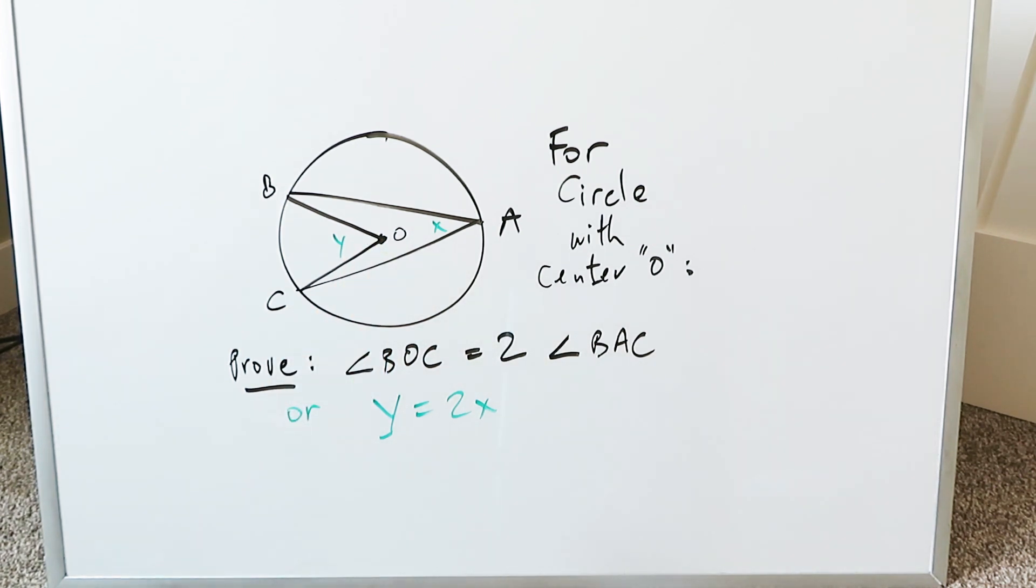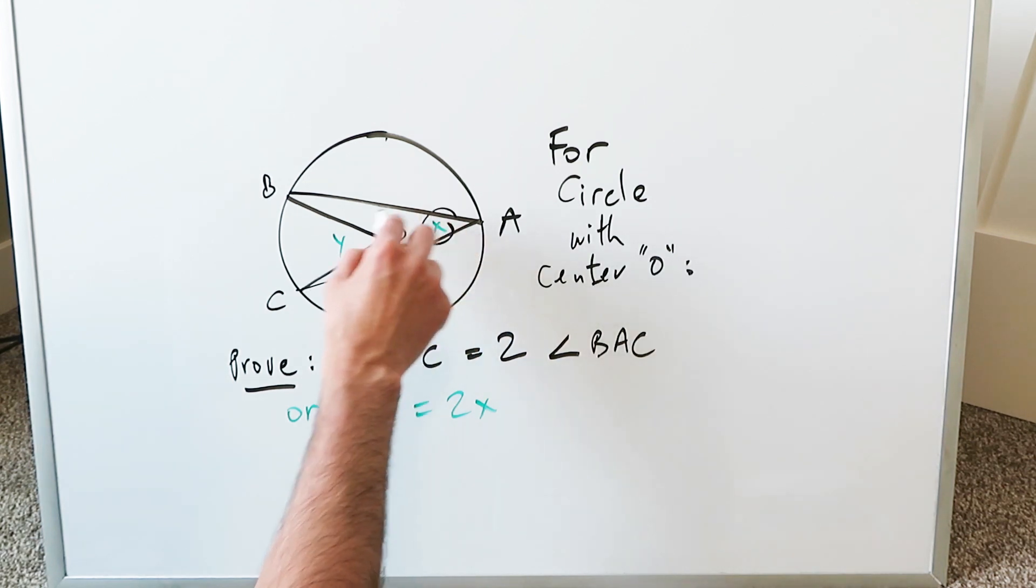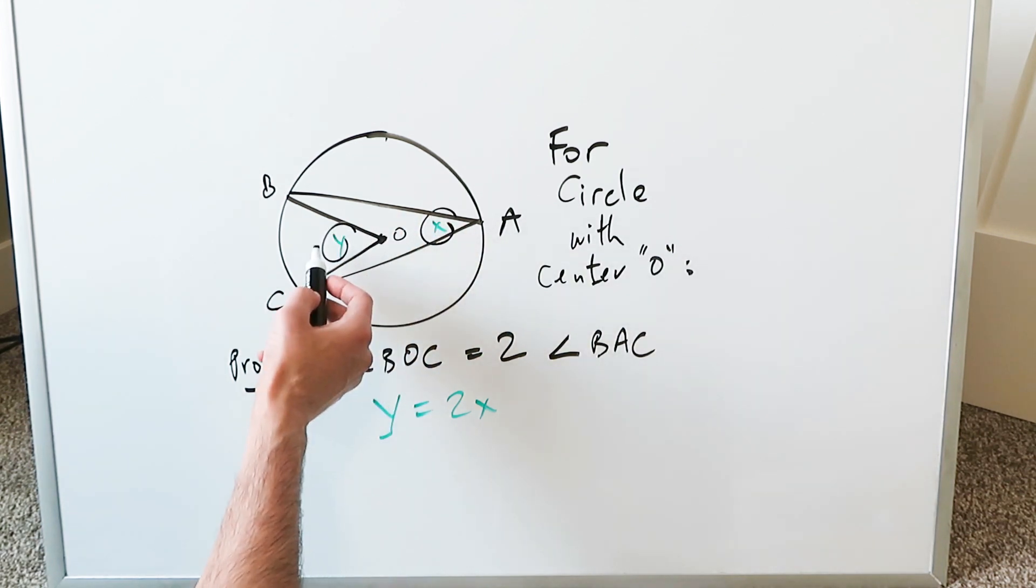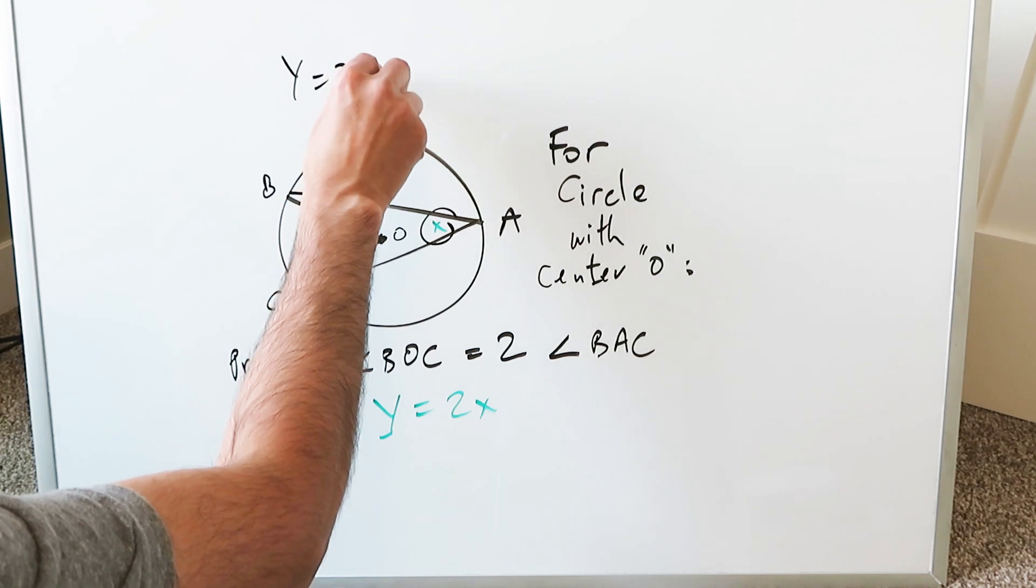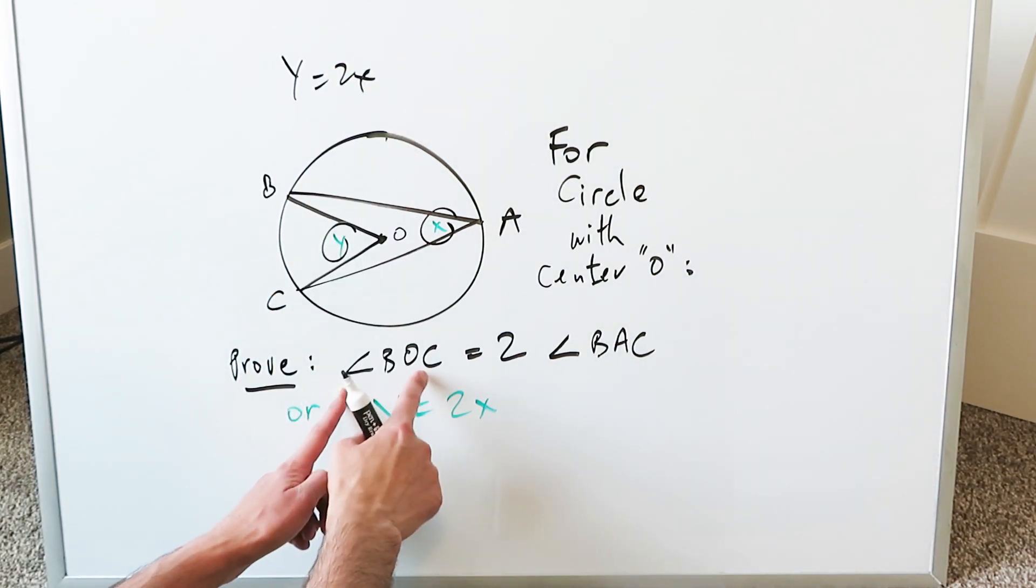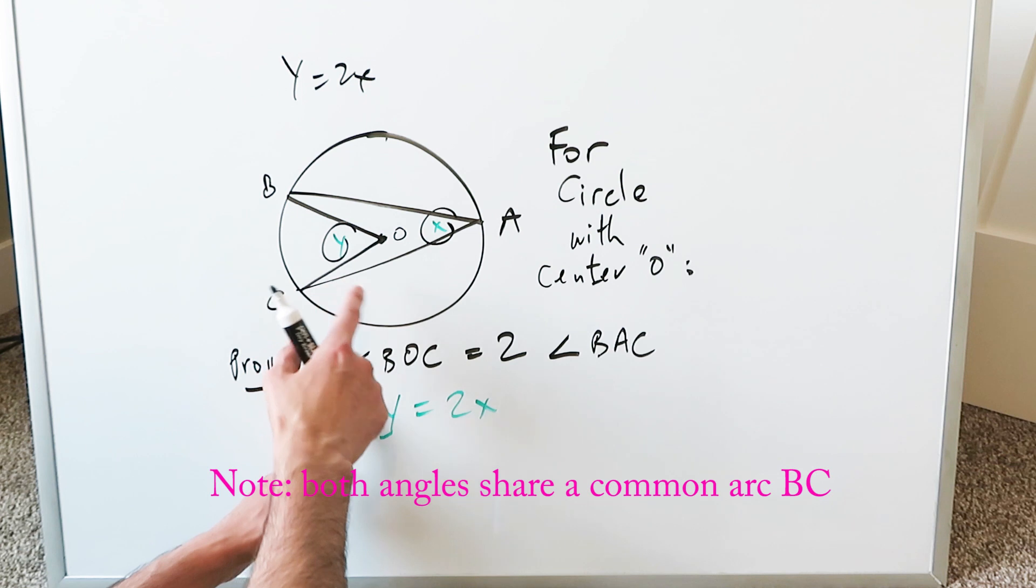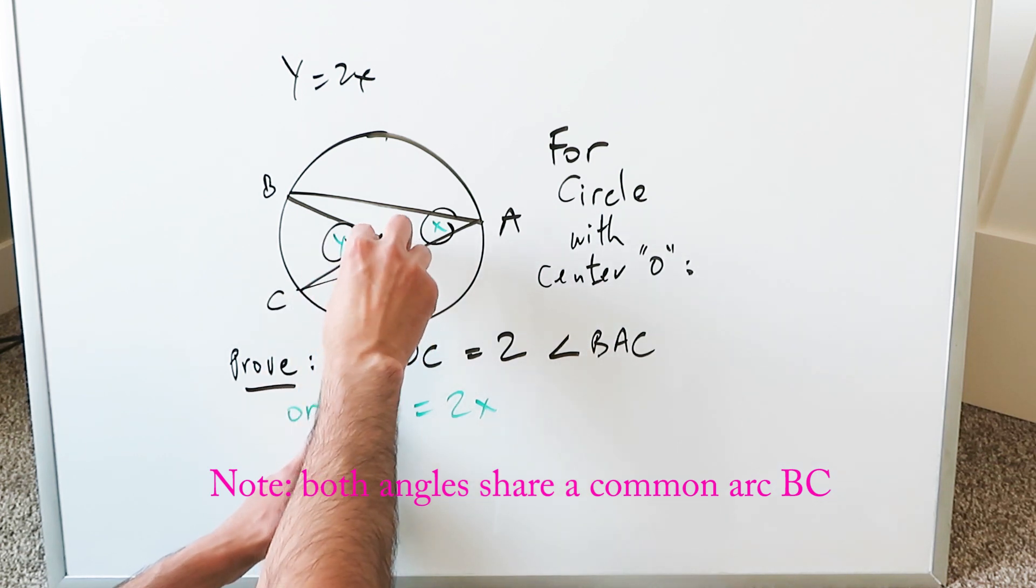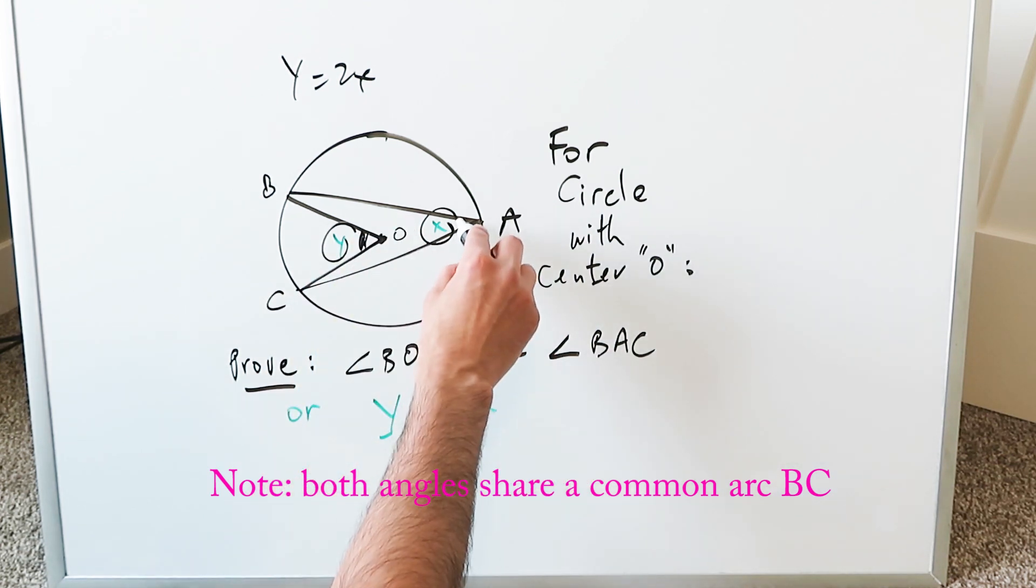You know this property to be true: that this angle over here will always be half of that angle there, or you could say y is equal to 2x. Very formally I've written the fact here—the angle BOC, which is this angle right here as you see, will be twice this angle BAC.